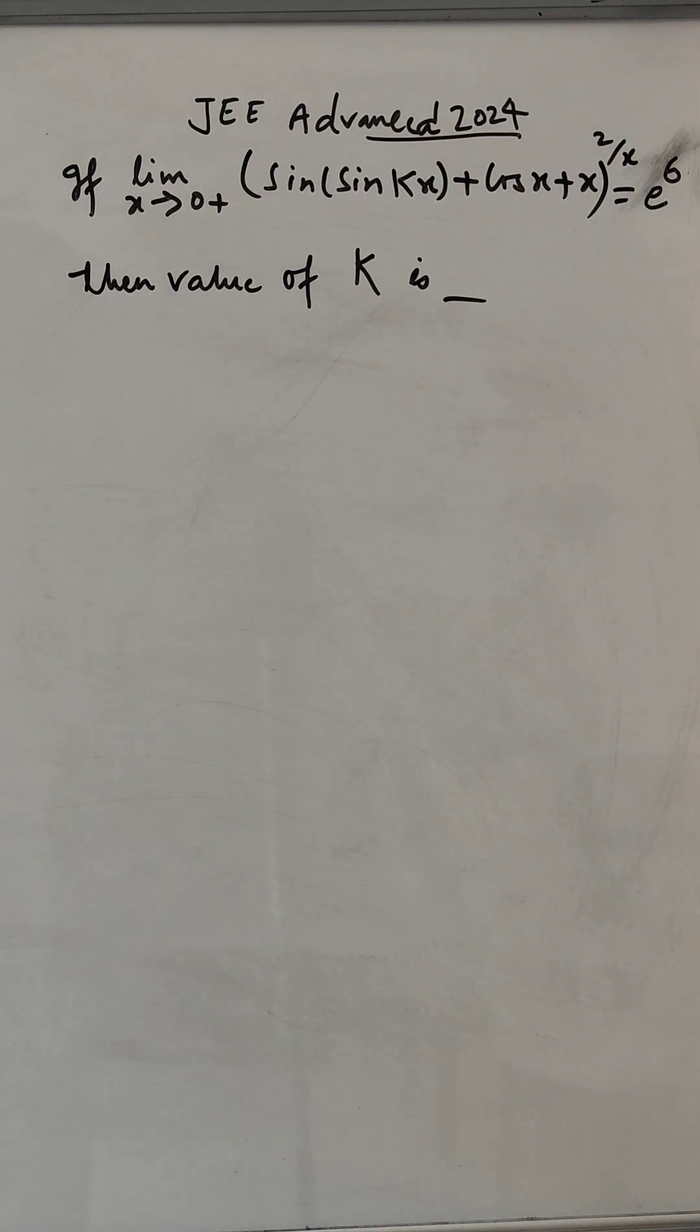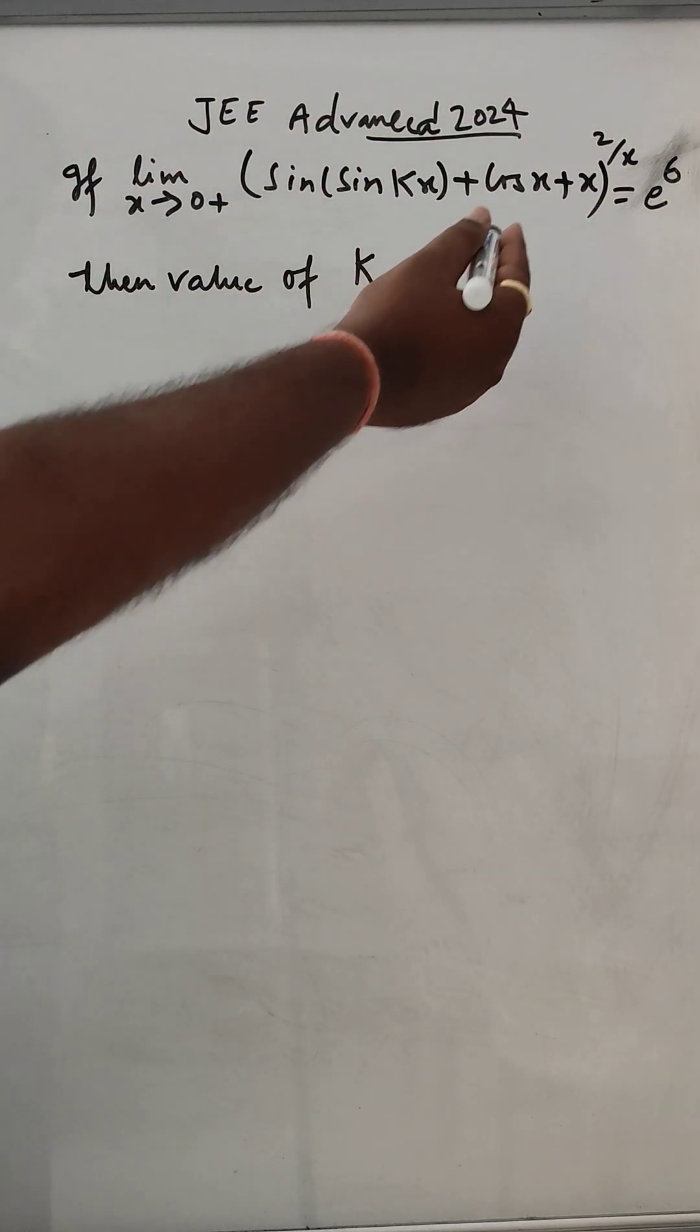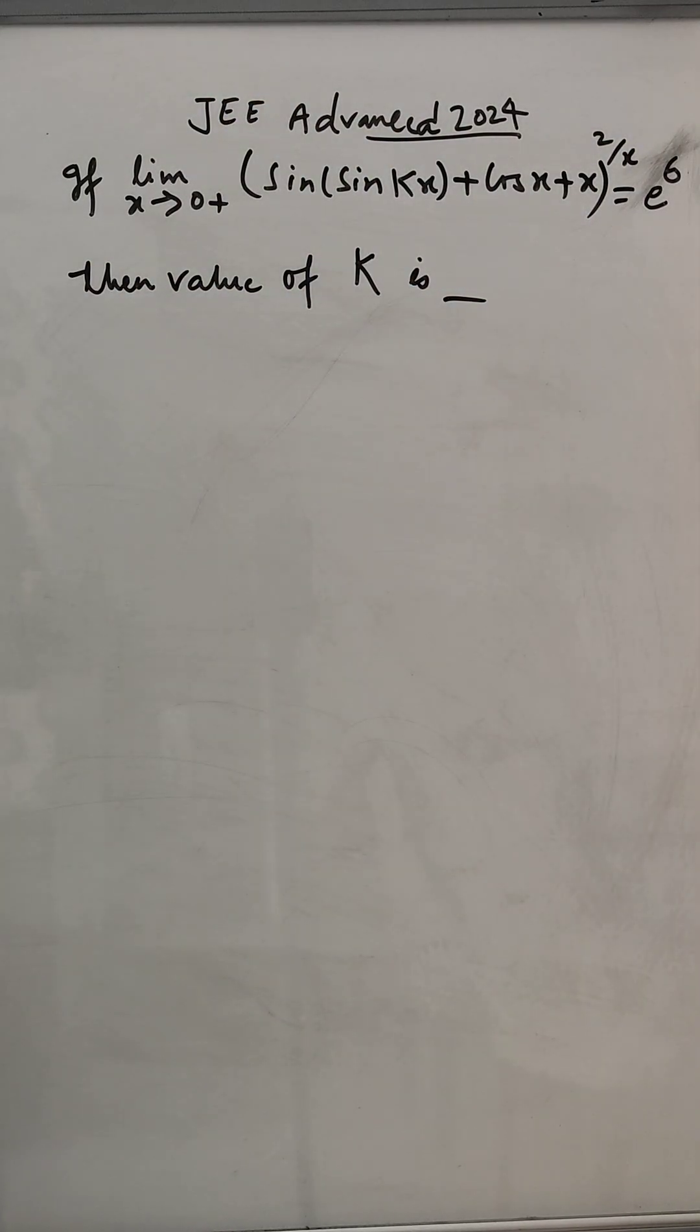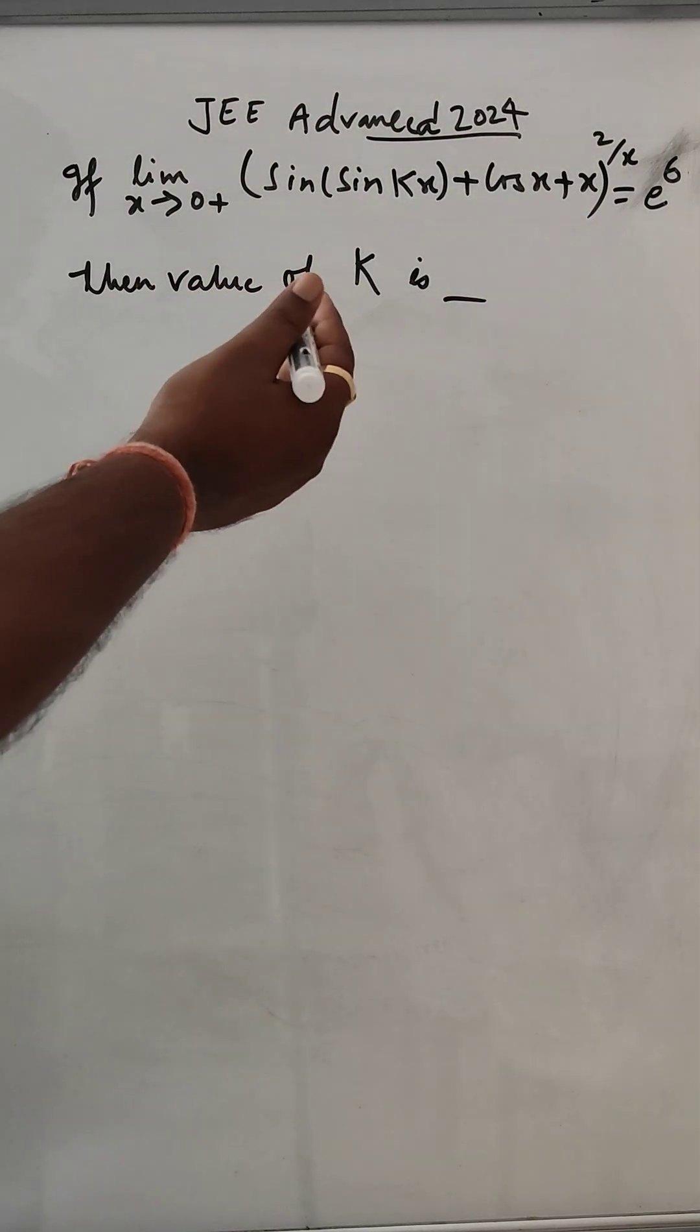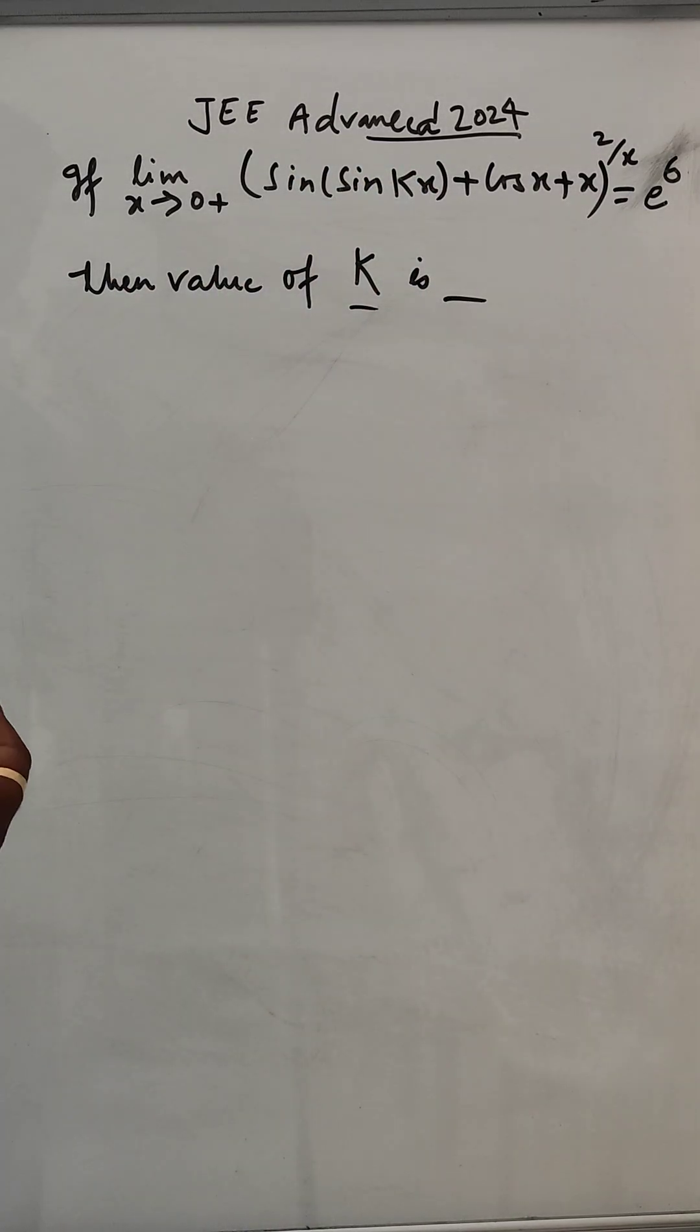Hello everyone, let us solve this problem from JEE Advanced 2024. The problem is: limit as x tends to 0 of [sin(sin(kx)) + cos(x) + x²]/x raised to the power 1/2 equals e^6. Then find the value of k.